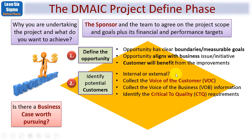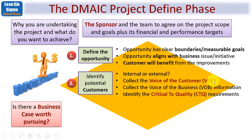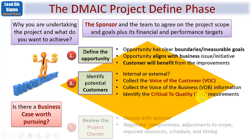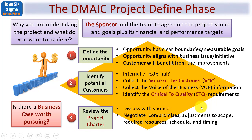We need to identify potential customers — are they internal customers such as another department or group, or external end users of our products or services? We need to collect what's known as the Voice of the Customer, or VOC, and also the Voice of the Business, or VOB, which checks that there is a viable, desirable, and achievable business case. We then identify critical to quality requirements, known as CTQ — we get the VOC first, and from that we generate the CTQ requirements.